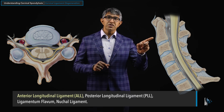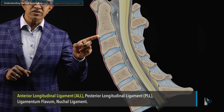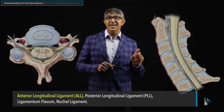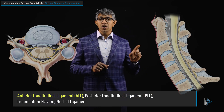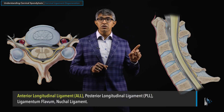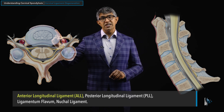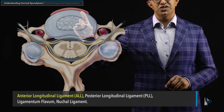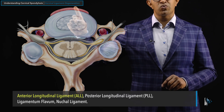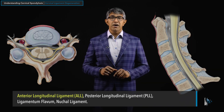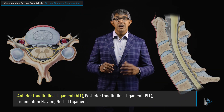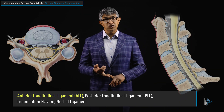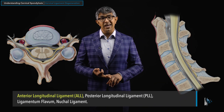There's a ligament that runs right down the front part of the spinal column called the anterior longitudinal ligament. In this sequence, you can see it as a crescent-shaped structure sitting right in the front, in the middle of the spinal column — the anterior longitudinal ligament, or the ALL.